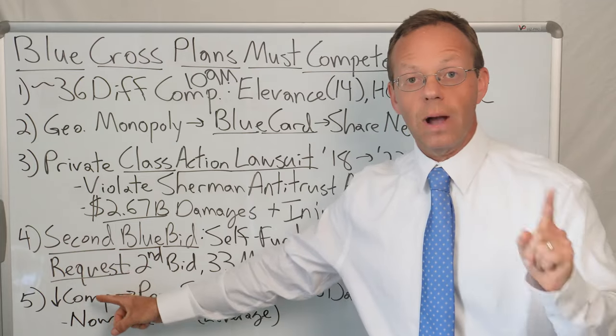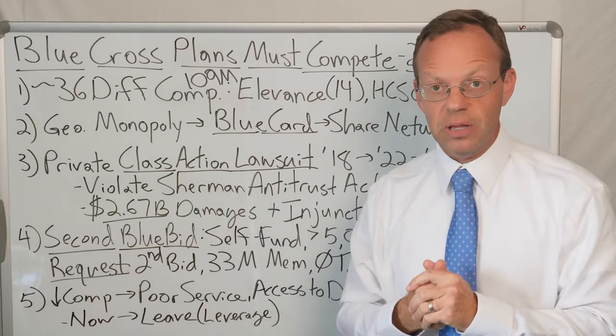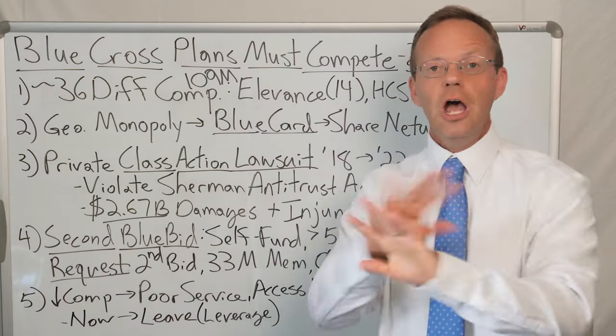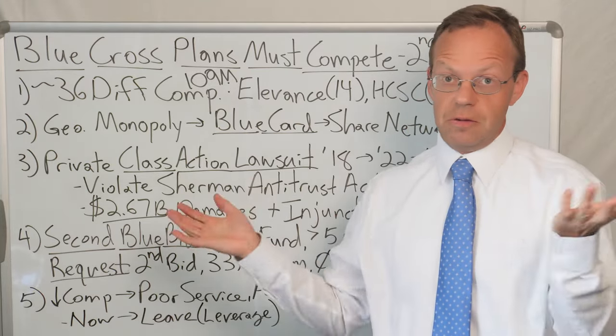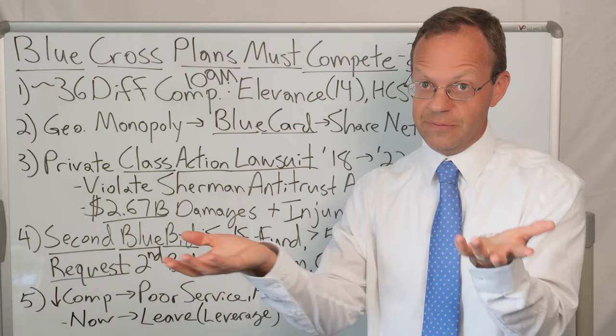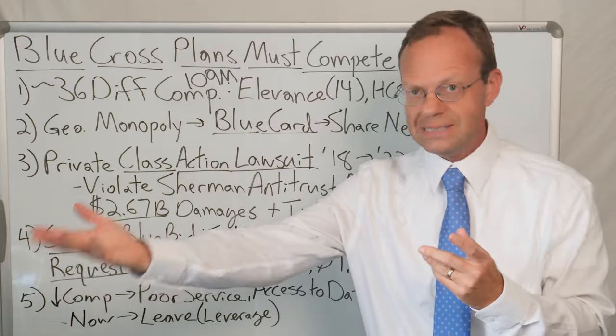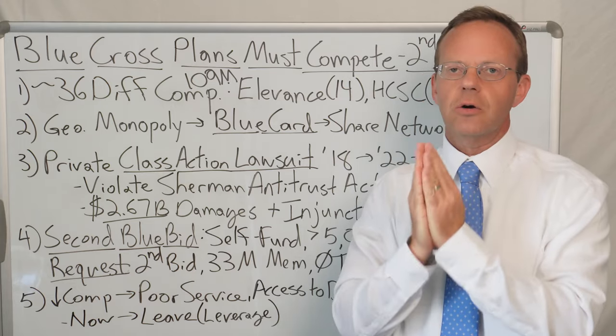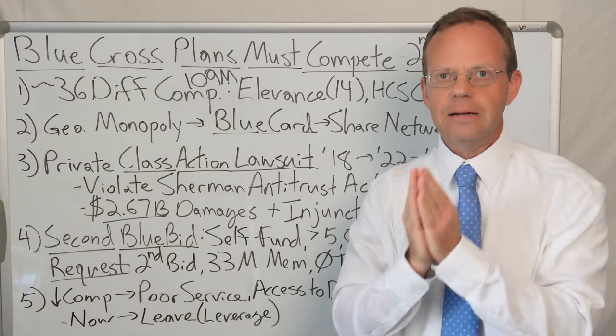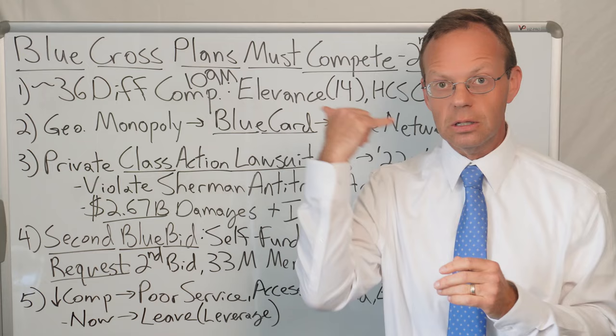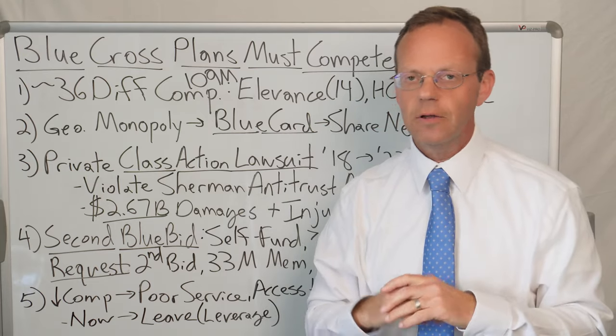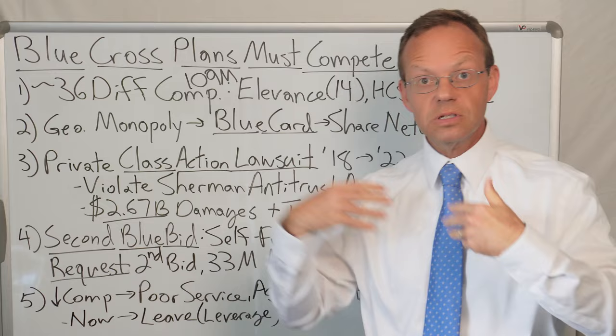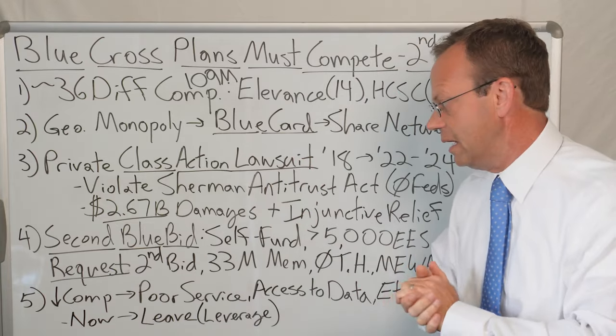So the key word here is request. Your existing Blue Cross plan is not going to go out of its way to be like, oh yeah, you can totally get a competitive bid from another Blue Cross plan. No. And your broker consultant may or may not avail you of this information that you can go out and request a second Blue bid. So you, the employer of your own volition, must go out and request a second Blue Cross bid. Now you can do it through your broker. You don't need to literally pick up the phone yourself. You can be like, hey, broker consultant, you need to go out and get a second Blue bid. You as the employer can ask your broker consultant to do that.